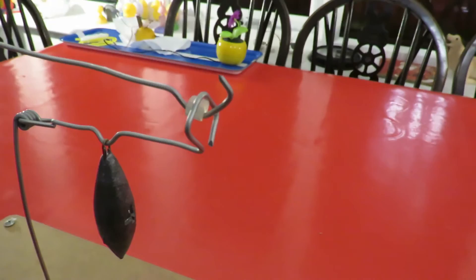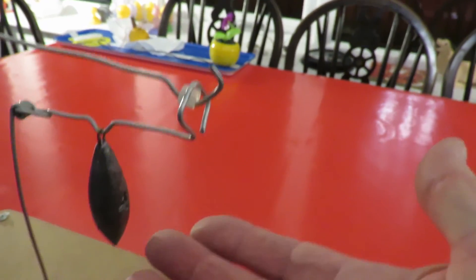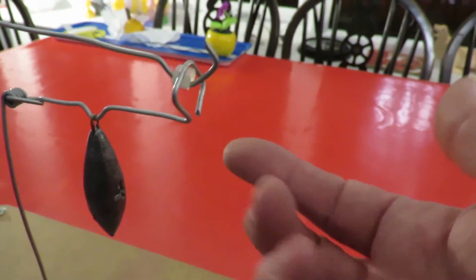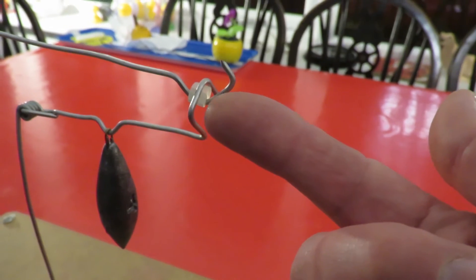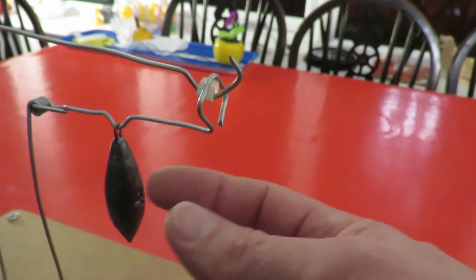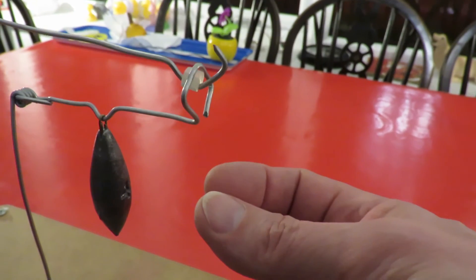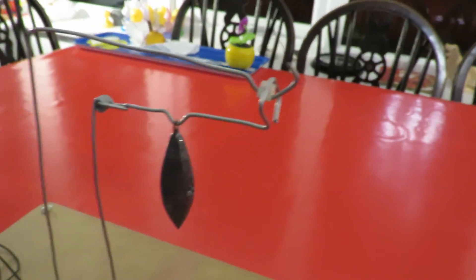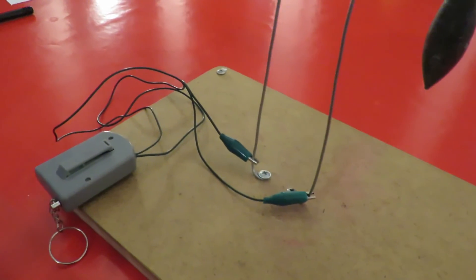When we have a fire under here, that'll heat up the hot glue. The hot glue will melt. That weight will make sure that this drops down and completes the circuit and sets the alarm off.